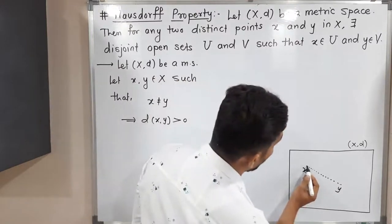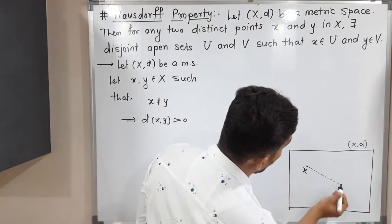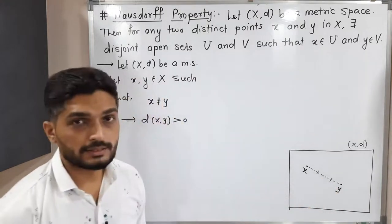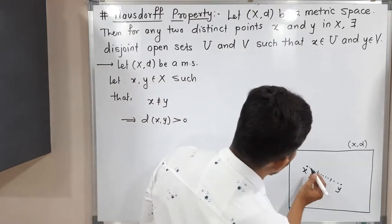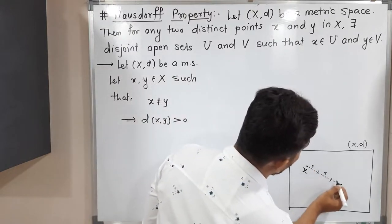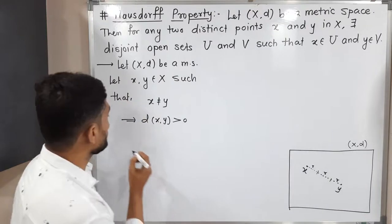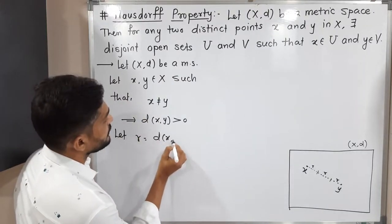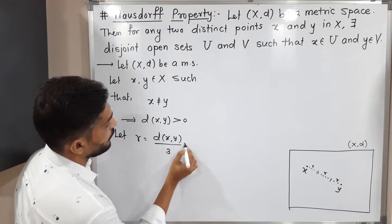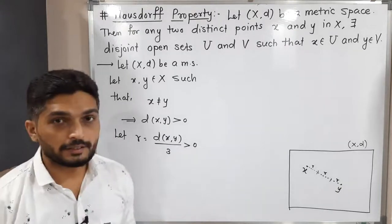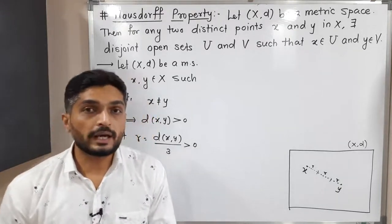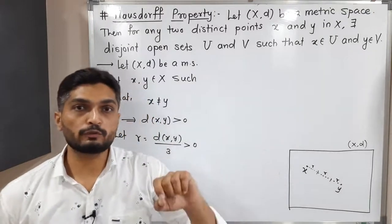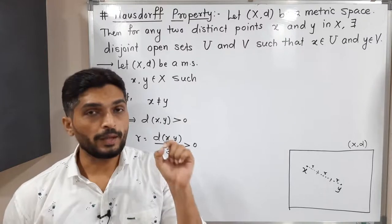We will divide this distance into three equal parts. Here we have x and y, and we divide the distance into three equal parts, each of length r. So let r = d(x, y) / 3, which is clearly greater than zero. Now we are in search of two open sets U and V such that x ∈ U and y ∈ V.